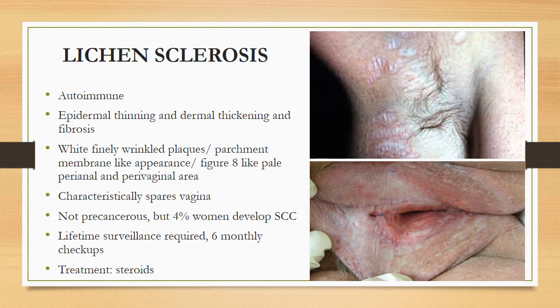We cannot miss lichen sclerosis because four percent of these women ultimately develop squamous cell carcinoma of the skin. That is why we need to do lifetime surveillance with six-monthly checkups.